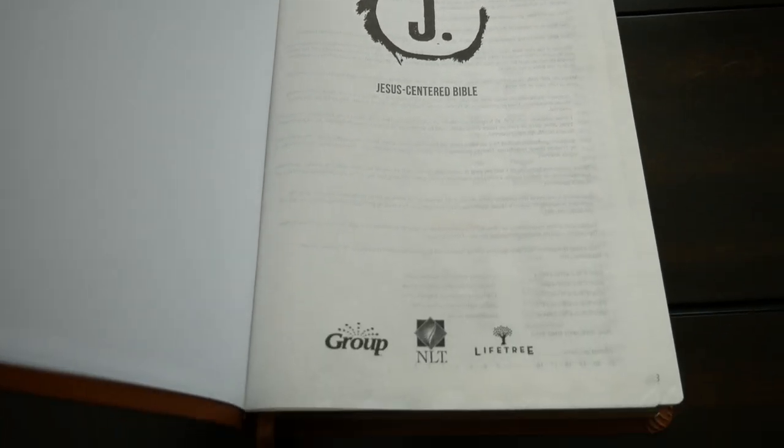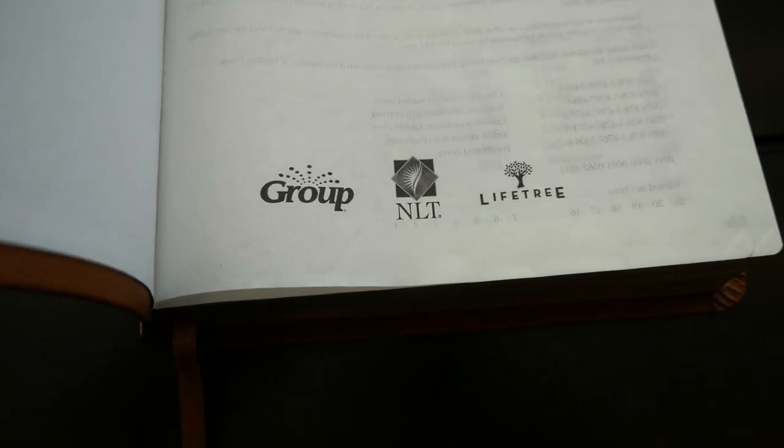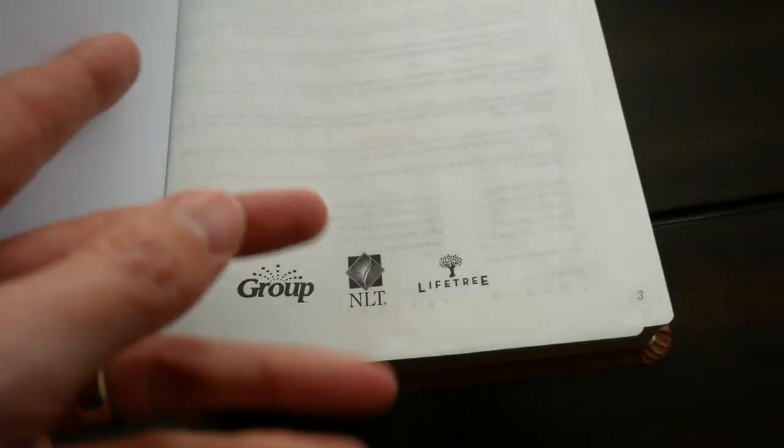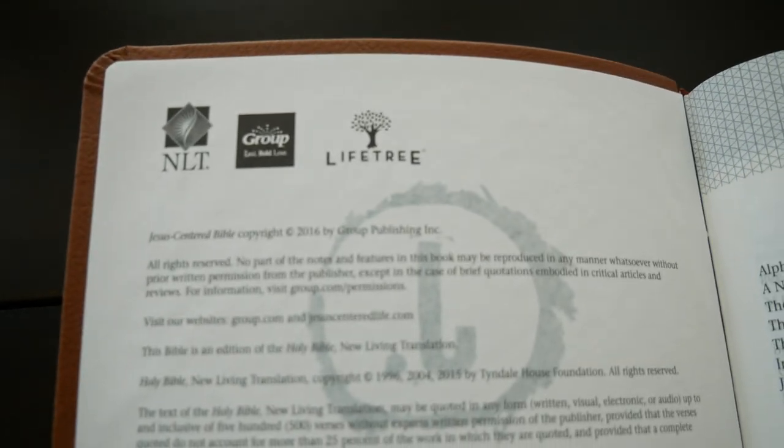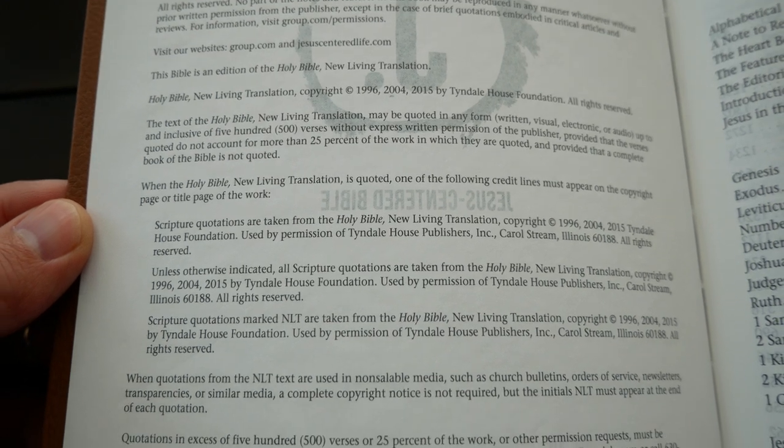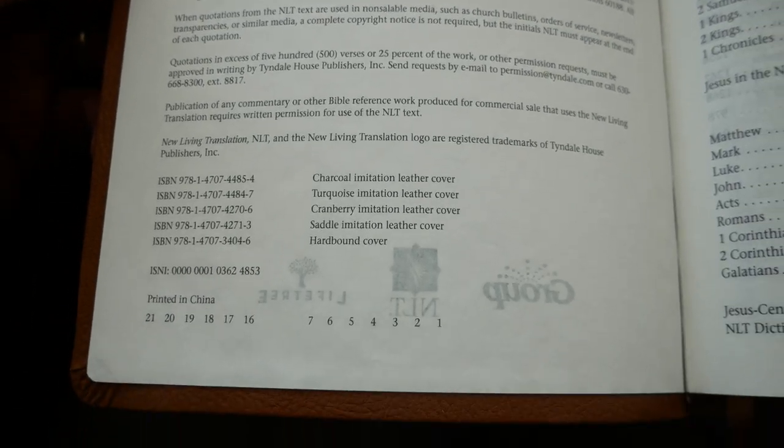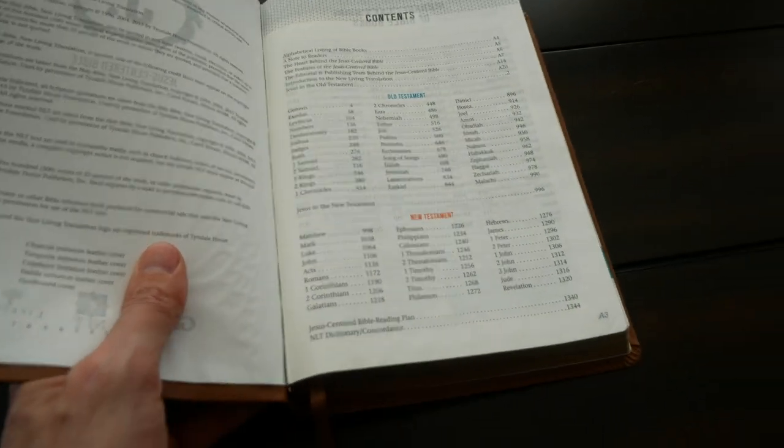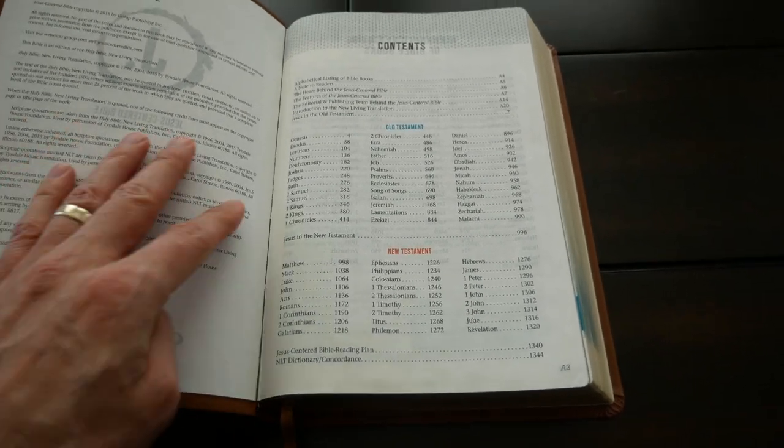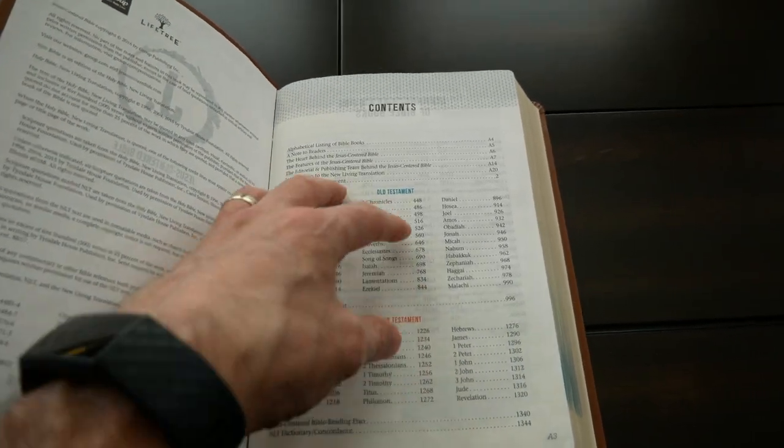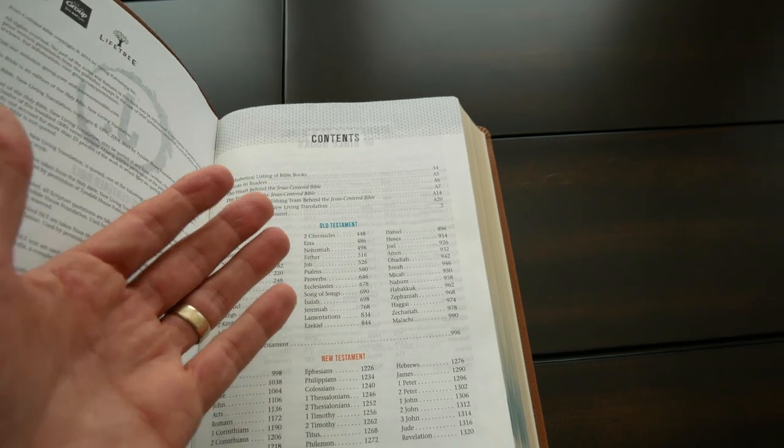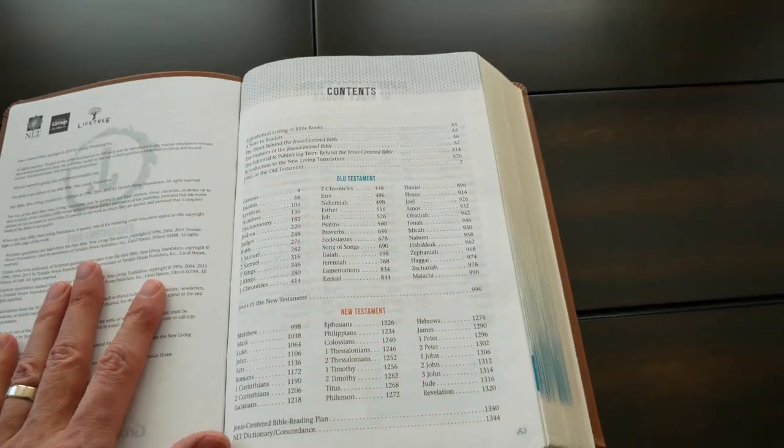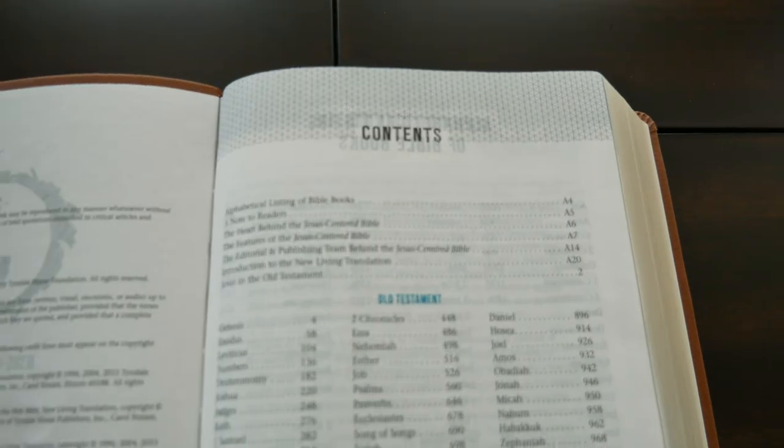So, Jesus-centered Bible has the title page. And here, the group logo, New Living Translation. And then Life Tree. And you have the information here. Again, with these three logos. And you can pause if you need to. Interesting thing to me is that this was published in 2016. 2016, that's exactly the date of my dissertation for my doctor of ministry.